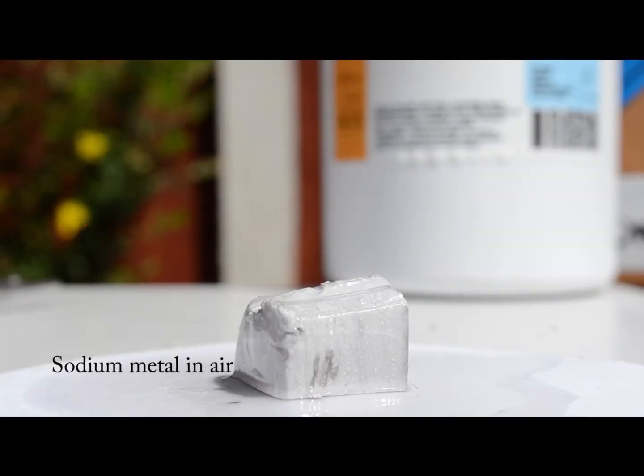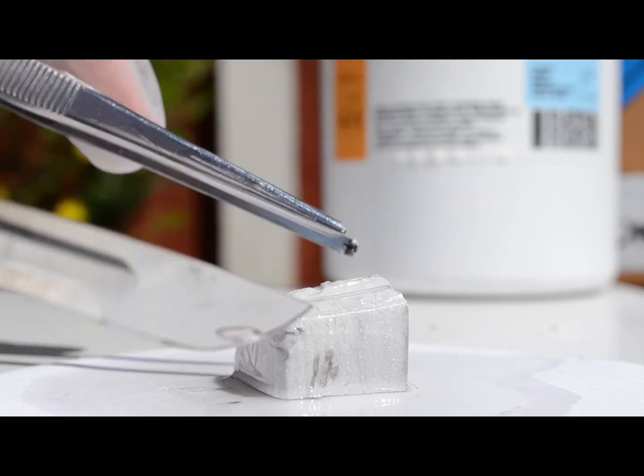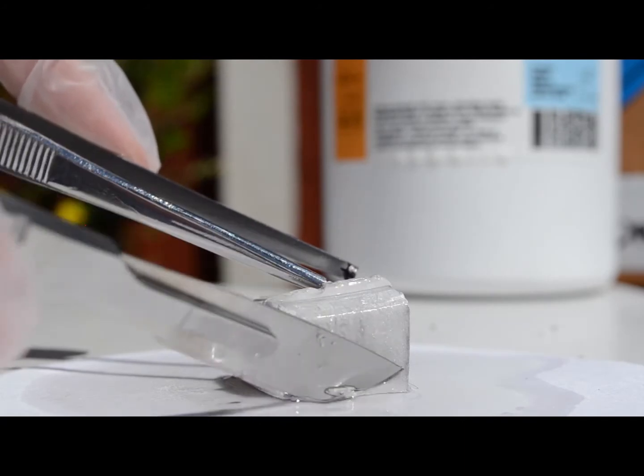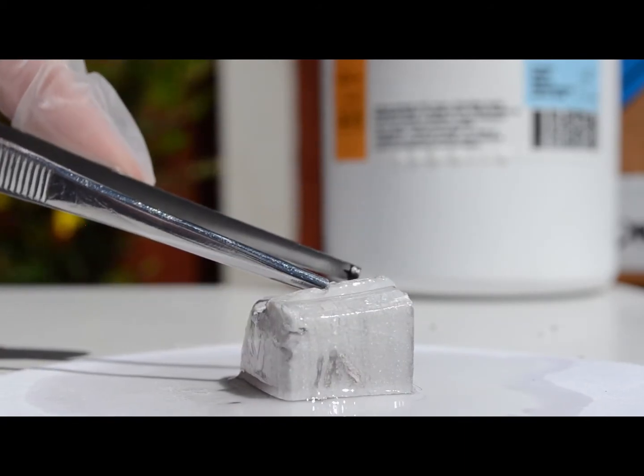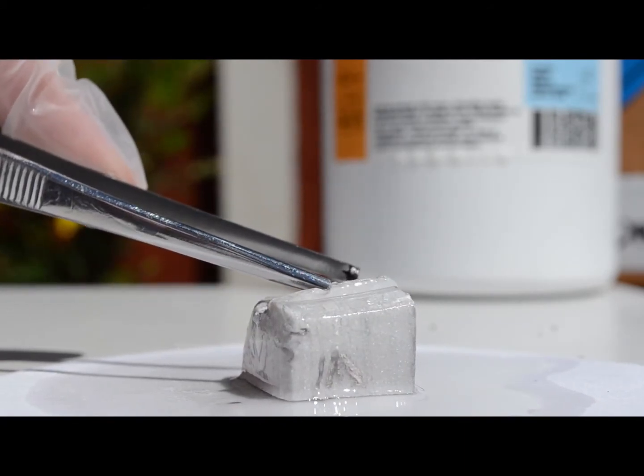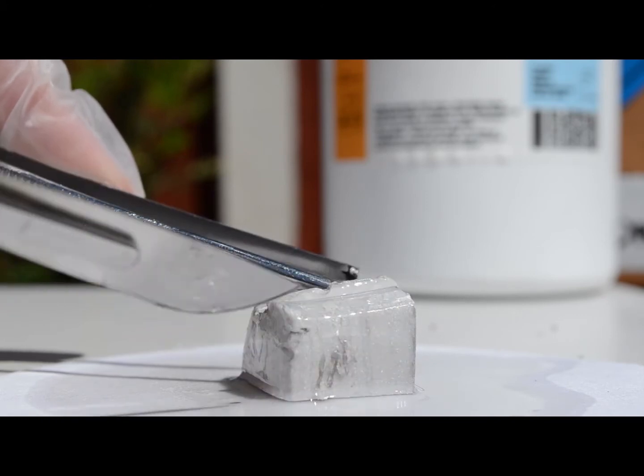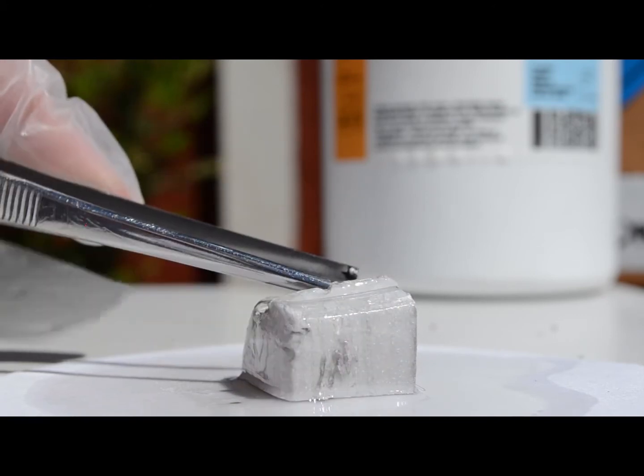This is a piece of sodium metal. You can see the white coating on there - that is a layer of sodium hydroxide. Because it's so reactive, it reacts with the air around us to form sodium hydroxide. It's actually the water vapor in the air that it reacts with to get this layer.